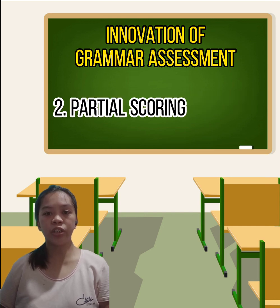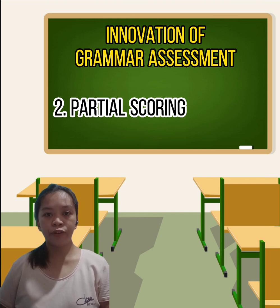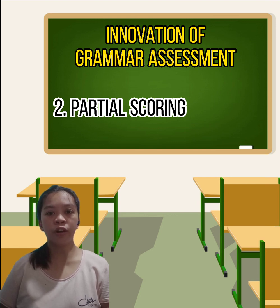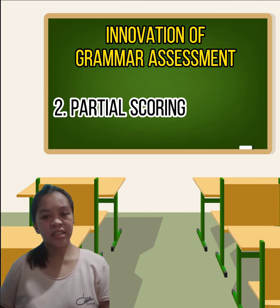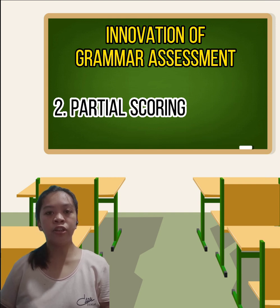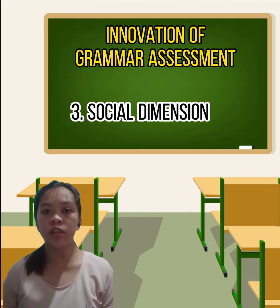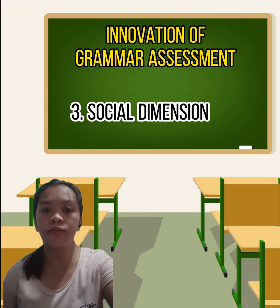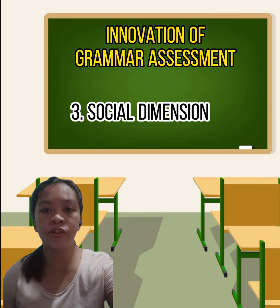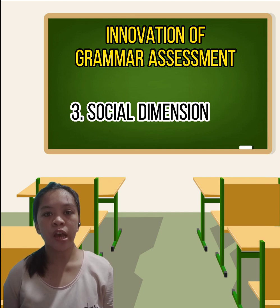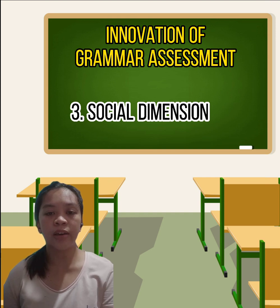Number two is partial scoring. It has been proposed that scoring grammatical items polytomously yields information about learners who have intermediary knowledge of grammar, rather than being treated as if they have no knowledge at all (Purpura, 2006). Number three is social dimension. It is the characteristic of context that affects how language is used, and social dimensions refer to the social contexts that are measured or analyzed through a five-point scale.